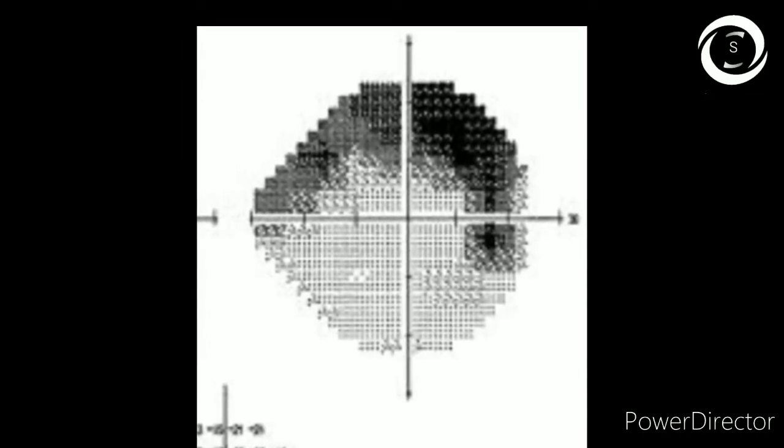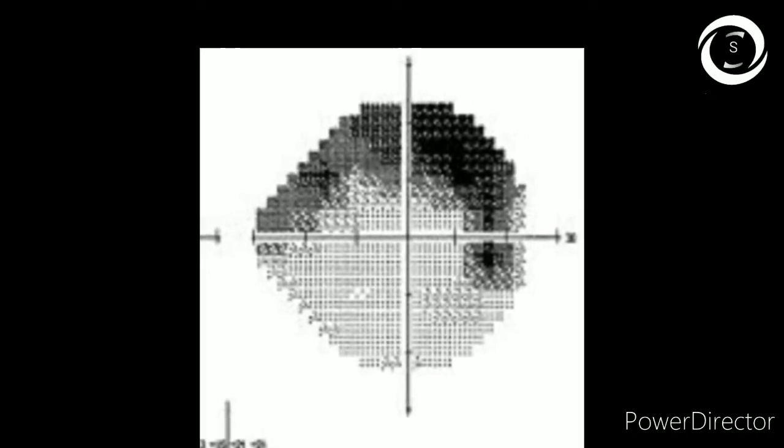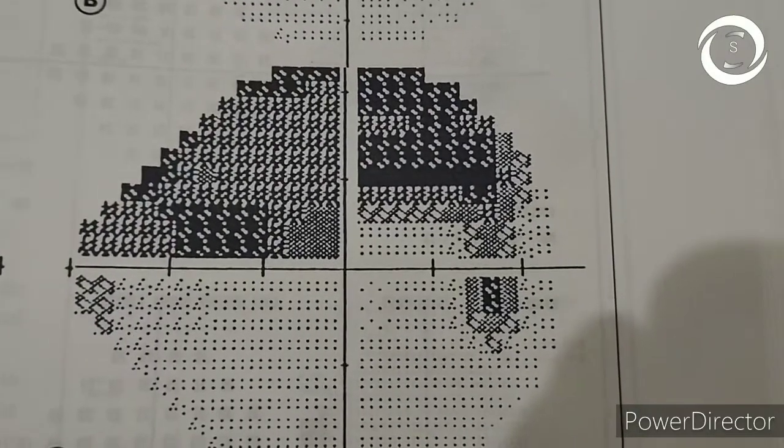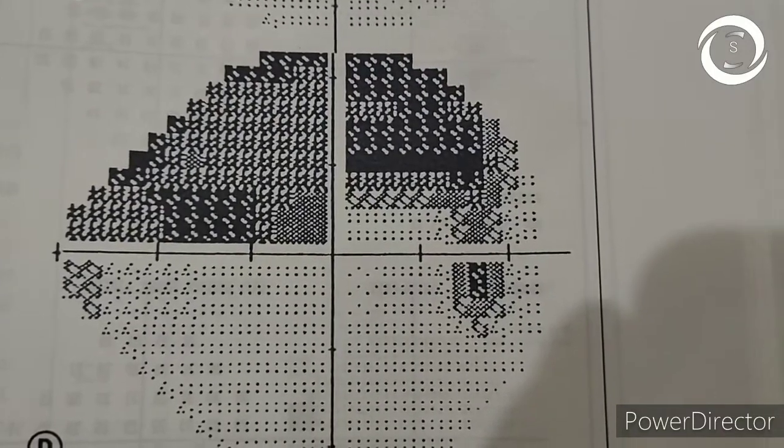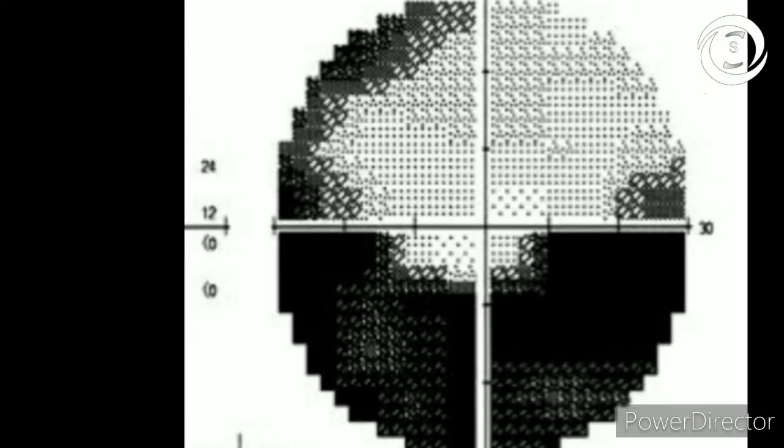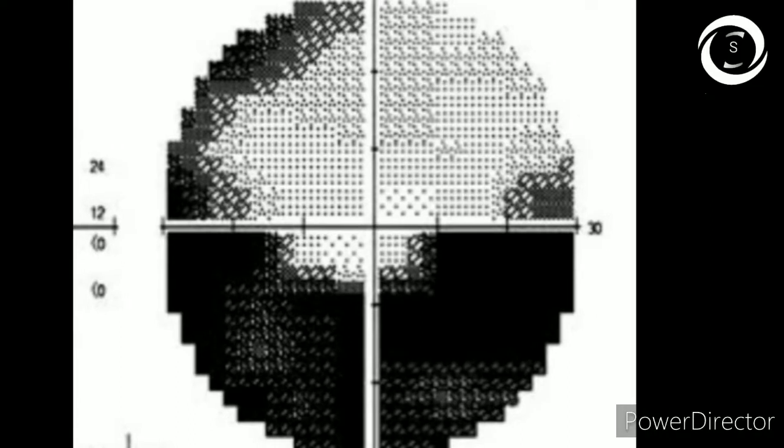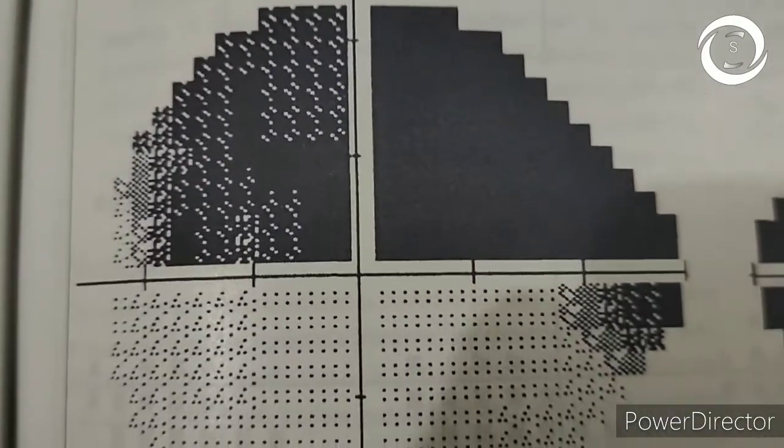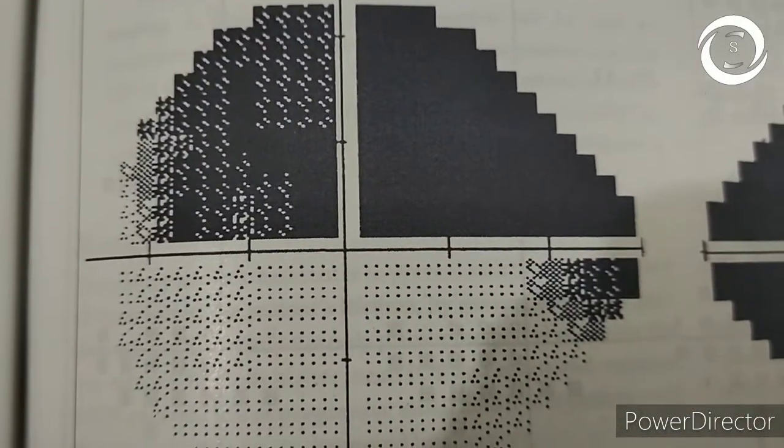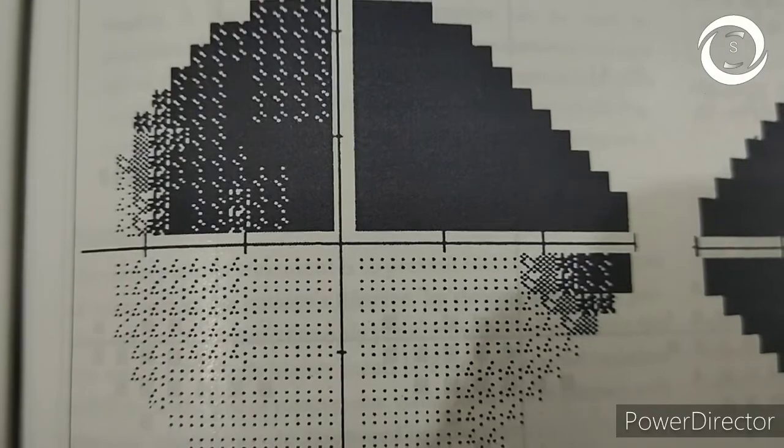As visual field defects progress in glaucoma, more and more fibers around the arcuate are involved, resulting in horizontal hemifield defect or altitudinal scotoma. Look at the inferior altitudinal scotoma in this patient's visual fields, and now superior altitudinal scotoma in the other patient's eye. That's how altitudinal defects are seen respecting the horizontal meridian.